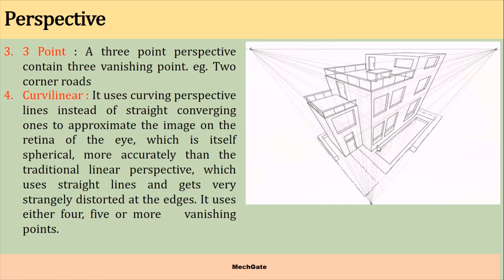Another type is curvilinear perspective projection. Instead of straight lines, it uses curving perspective lines converging to approximate the image on the retina of the eye. Our eye has a spherical shape, so when we see any object, curvilinear perspective projection more accurately replicates what is seen on our retina. It is more accurate than traditional linear perspective, which uses straight lines and gets distorted at the edges.